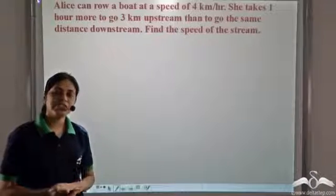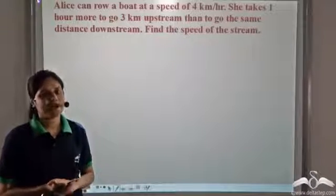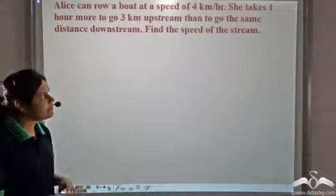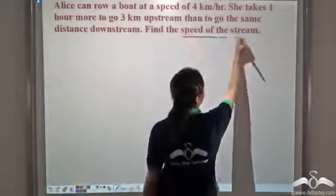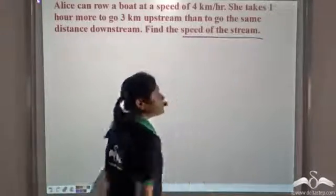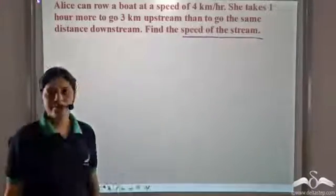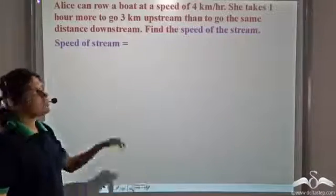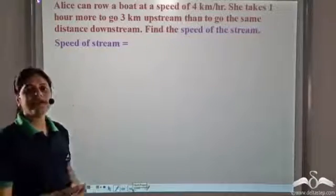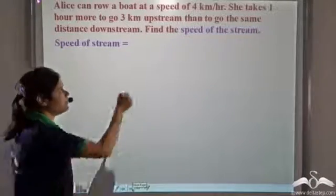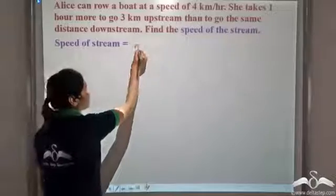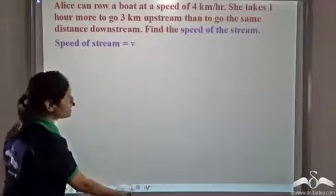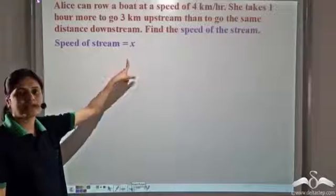The first thing is to find what is the unknown. We need to find the speed of the stream — that is the unknown here. Let us take the speed of the stream to be x. So speed of the stream is equal to x.